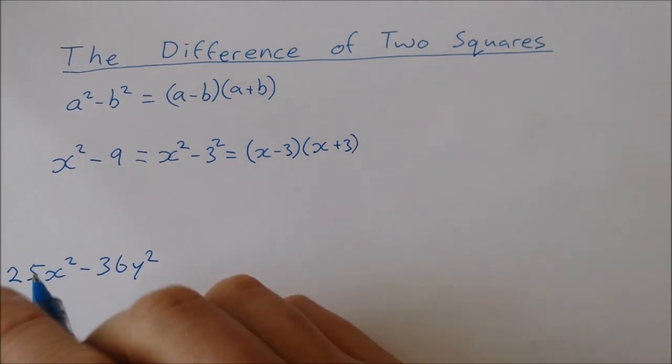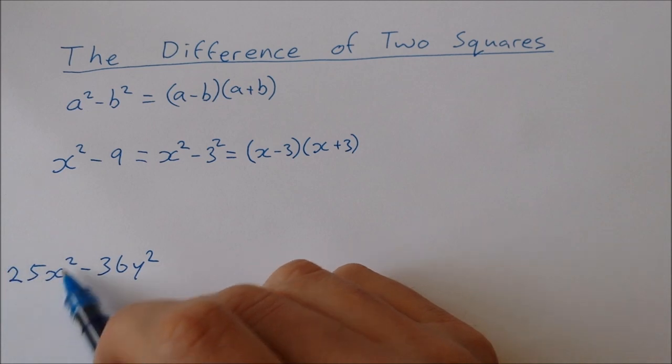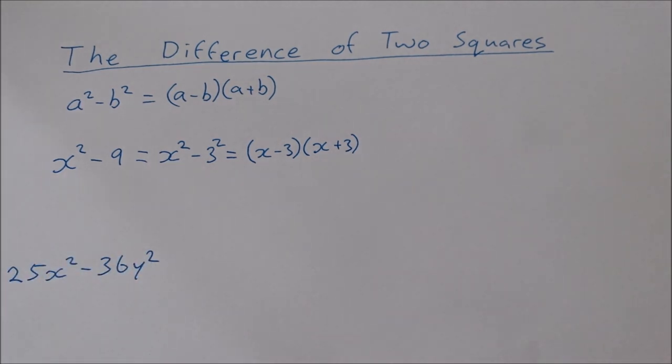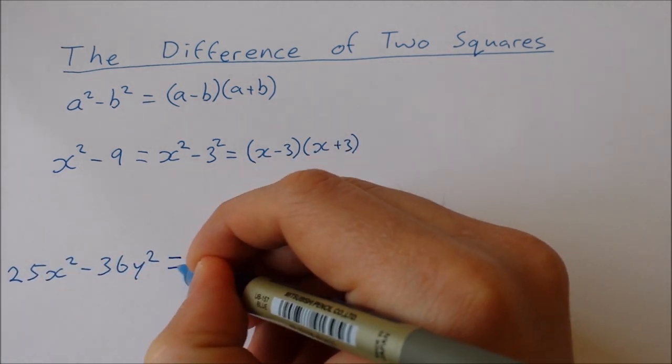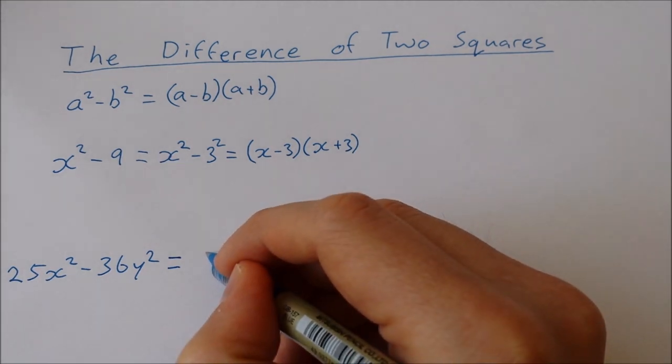For the next example, 25x squared minus 36y squared, we need to do the same. We need to write each term as a perfect square. So if you know your square numbers, you'll know that 25 is actually 5 squared.